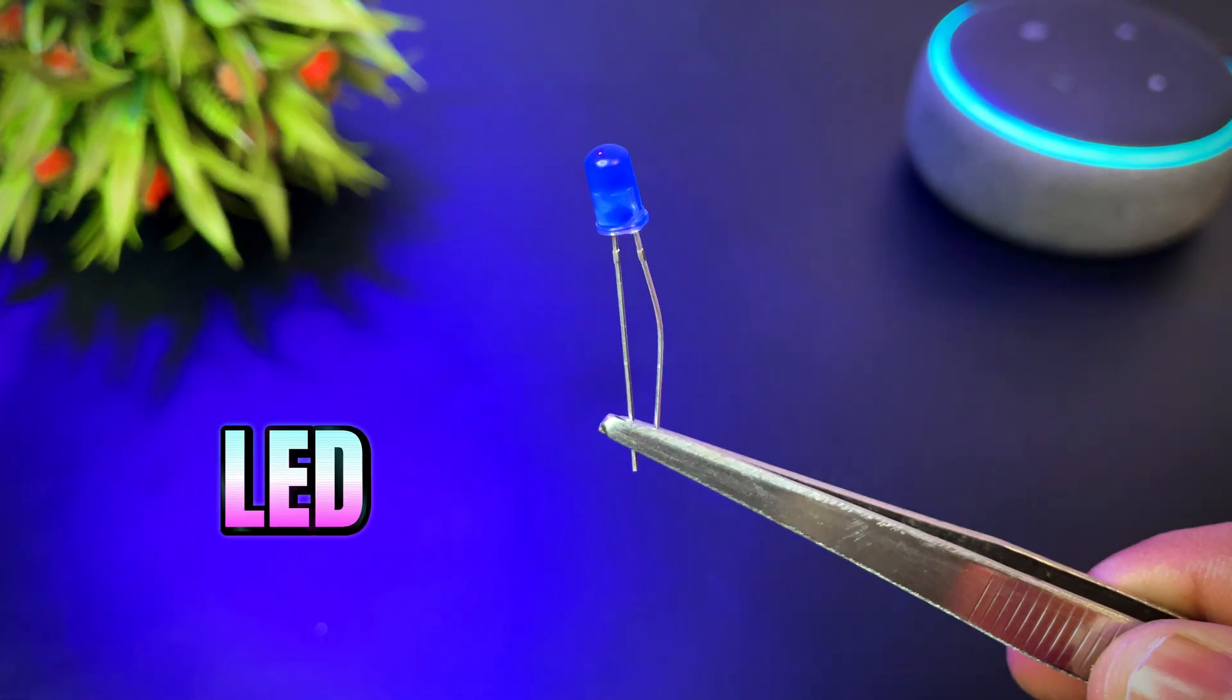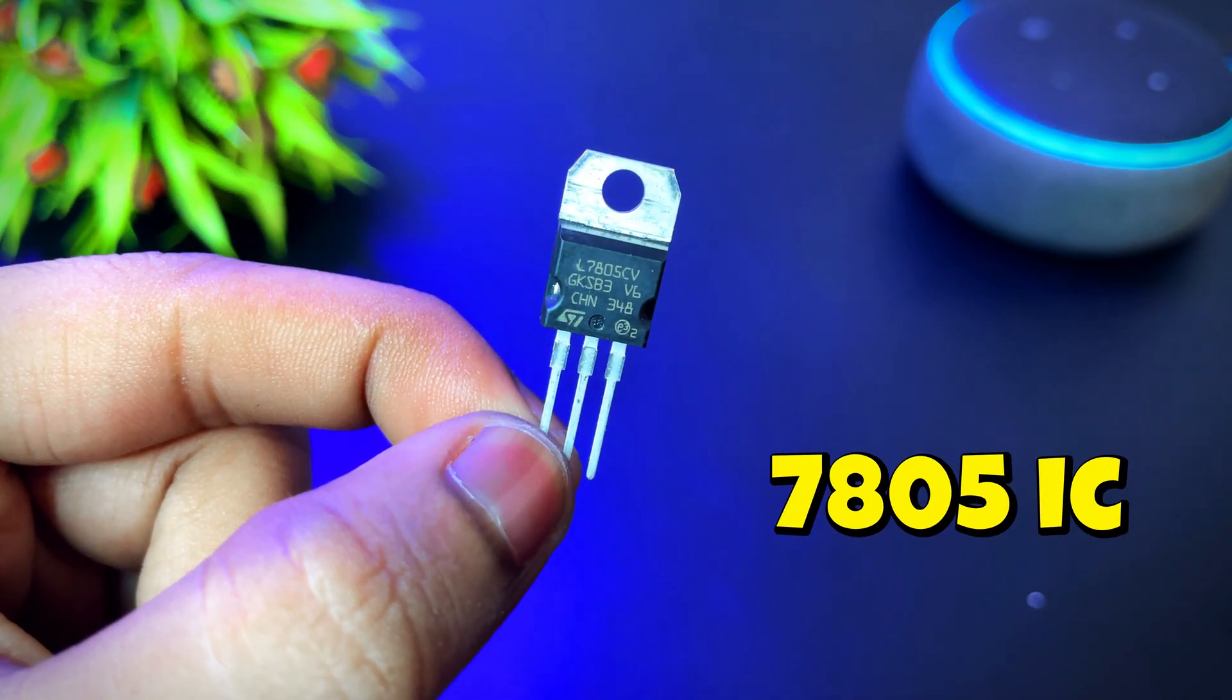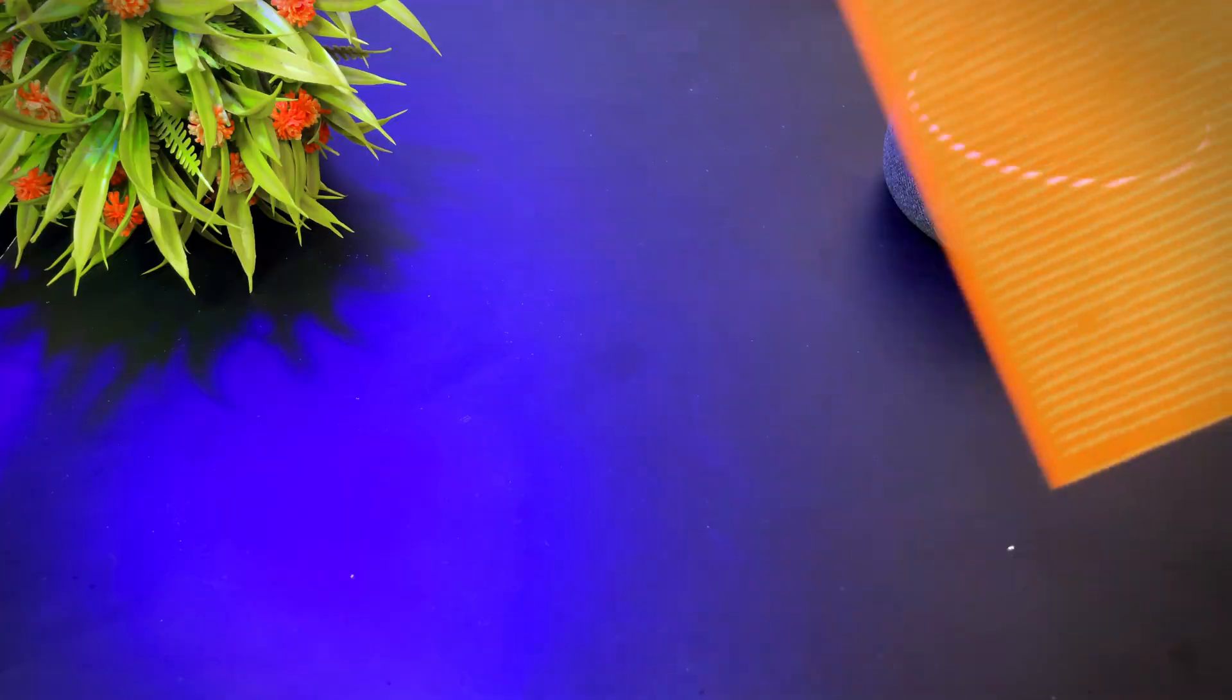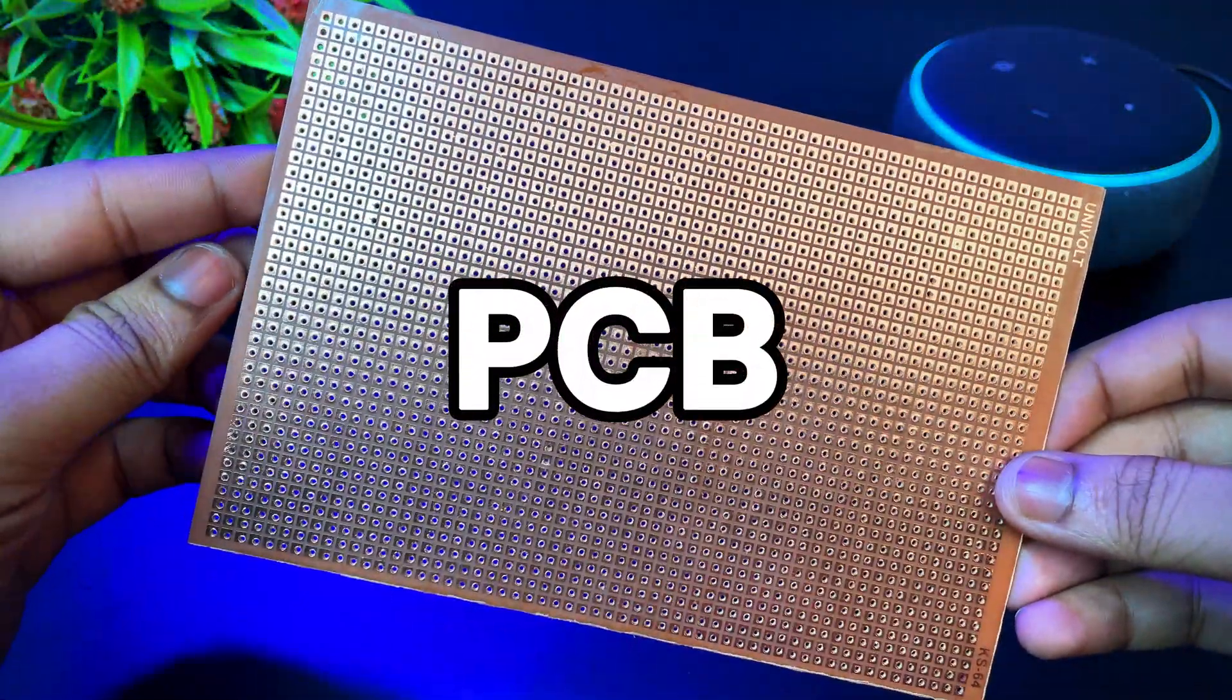A blue LED for indication. Then a 5 volt regulator IC. We also need 4 IC bays. And a 9 volt battery for power supply. And finally, a big size PCB board.